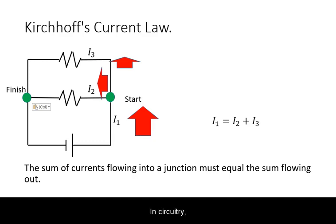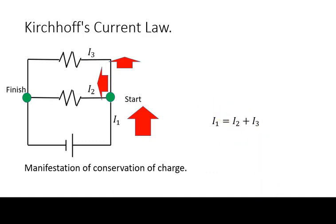In circuitry, the total current flowing into a junction must equal the sum of currents flowing out. This is to obey the conservation of charge. This is also referred to as Kirchhoff's current law.